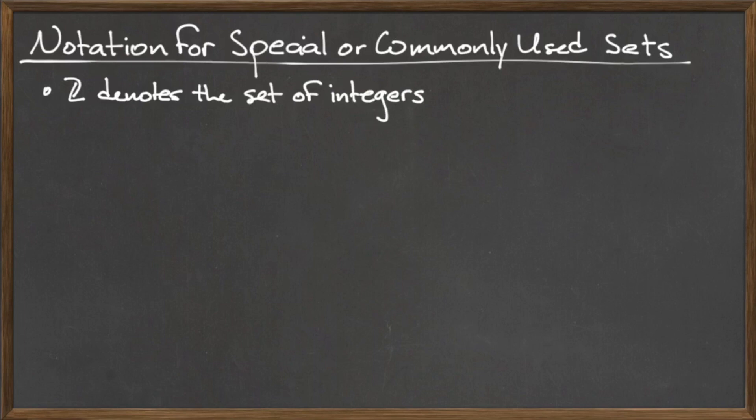Capital blackboard Z denotes the set of integers, and capital blackboard N denotes the set of natural numbers.